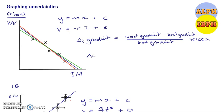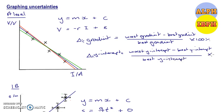In order to do the same thing for the y-intercept, it's very similar. So you look at your worst y-intercept, so which one's furthest away from your best y-intercept. And you take your worst y-intercept, take away your best y-intercept, divide by your best y-intercept, and then multiply by 100%.